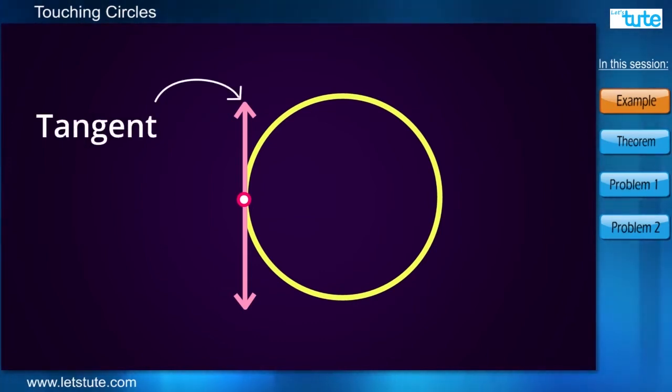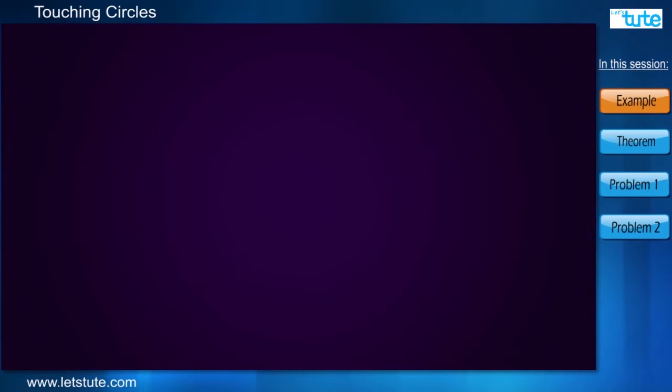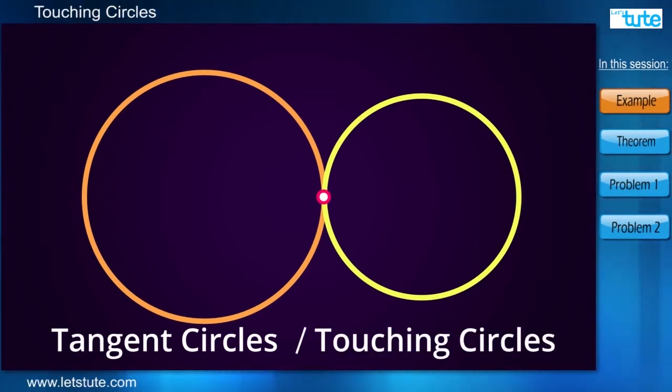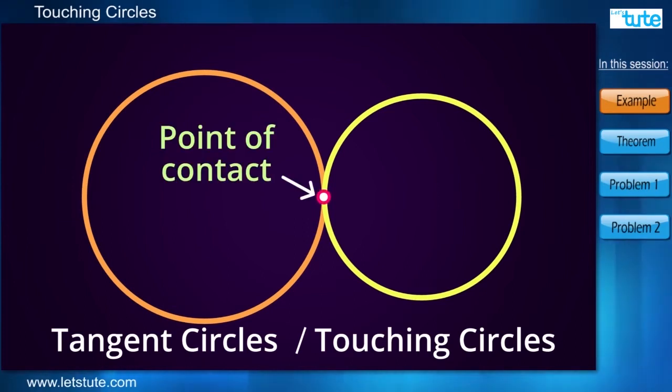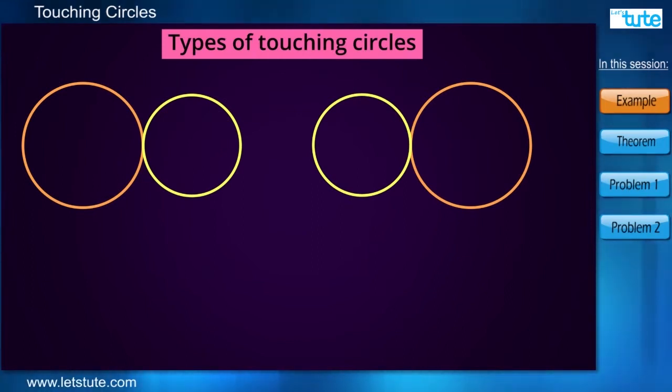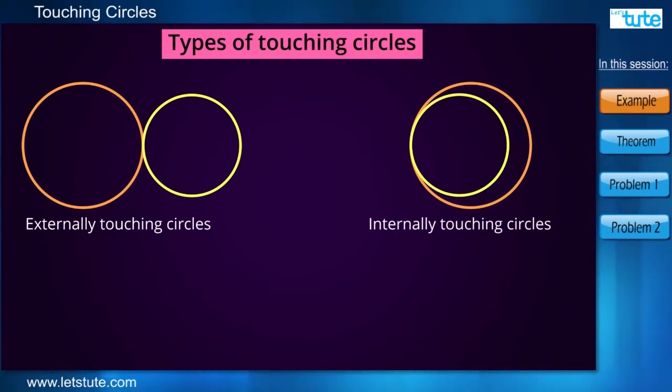So when we have two circles touching at one point, they are called tangent circles or touching circles. And the common point is called the point of contact. Now touching circles can be of two types. Either they can be externally touching circles or they can be internally touching circles.